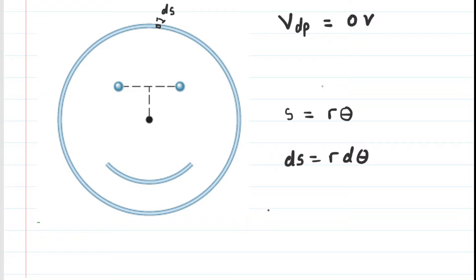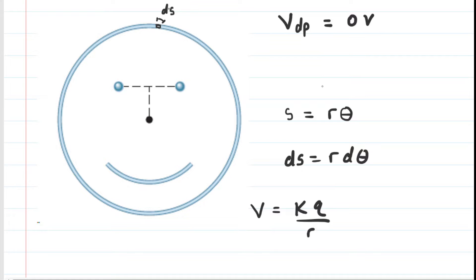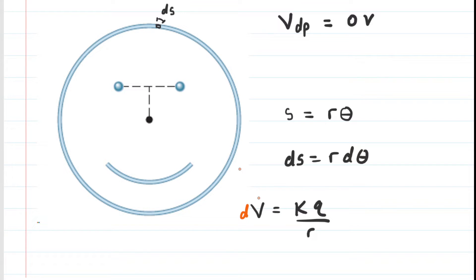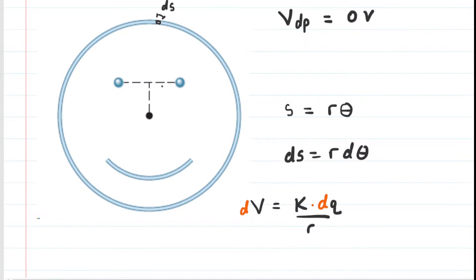Next, we look at the electric potential produced by this tiny charged element. For a point charge, it was V = kQ/R. But because we have a tiny differential element — a tiny arc length — we use differential notation. The potential created by that little charged arc is going to be dV, and the charge on that little arc is so tiny that we call it dQ. So a small modification to the electric potential equation gives us dV = k·dQ/R, the electric potential produced by that charged element.